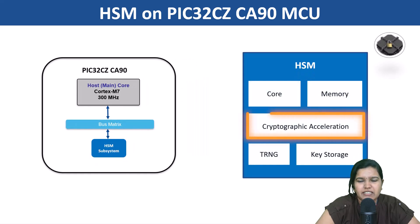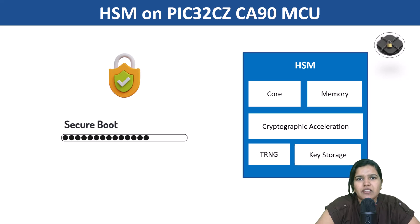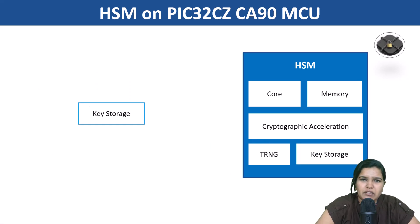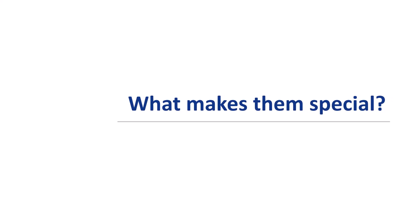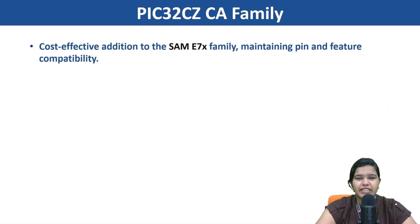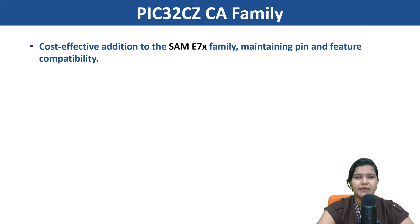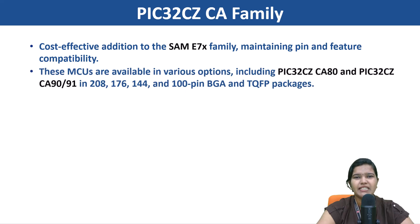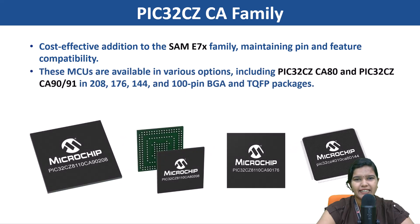Robust features such as hardware security module (HSM), cryptographic accelerators, secure boot, authentication, and secure key storage. It is a cost-effective addition to the SAM E7x family, maintaining pin and feature compatibility. These MCUs are available in various options such as PIC32 CZCA80 and PIC32 CZCA90 in 208, 176, 144, and 100-pin BGA and EQFP packages.